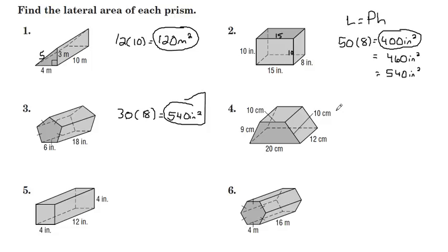For number four, it looks like we have a trapezoidal prism. Notice the bases are trapezoids, and the perimeter around each base, around each side here is 10, 10, 20, and 9, giving us a perimeter of 49. If we multiply that by the height of 12, 49 times 12 gives us 588 centimeters squared.